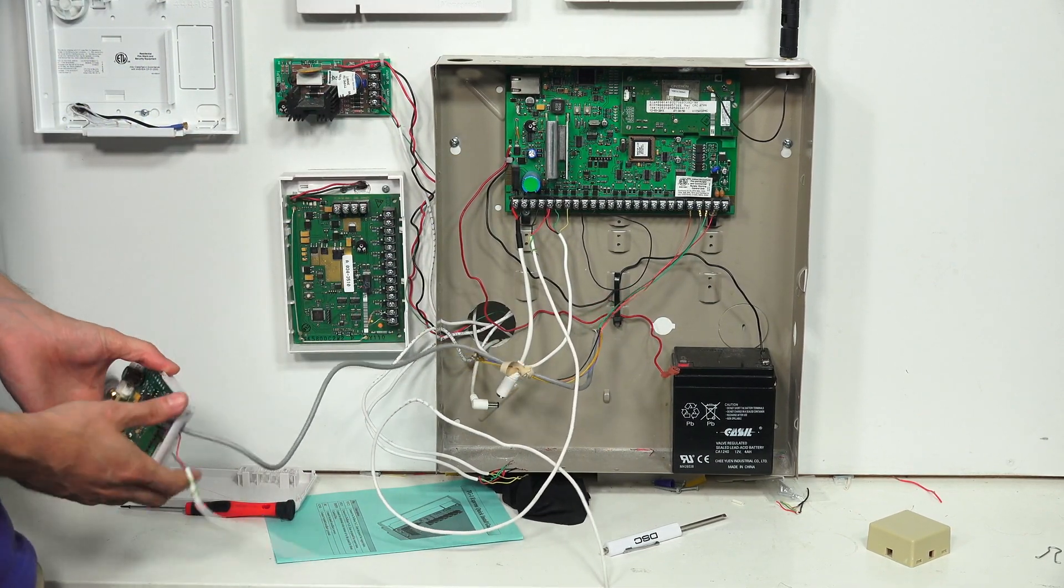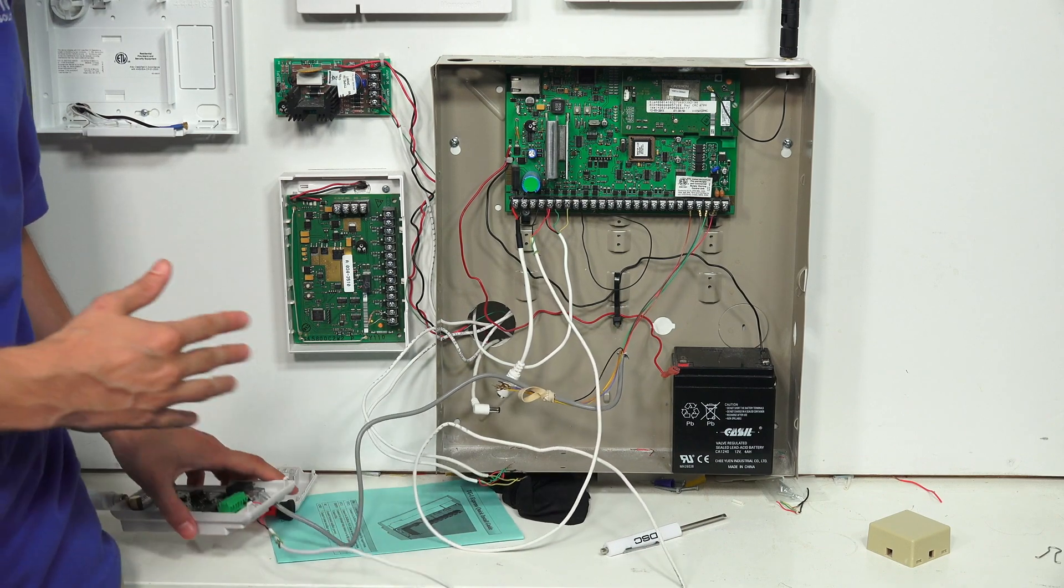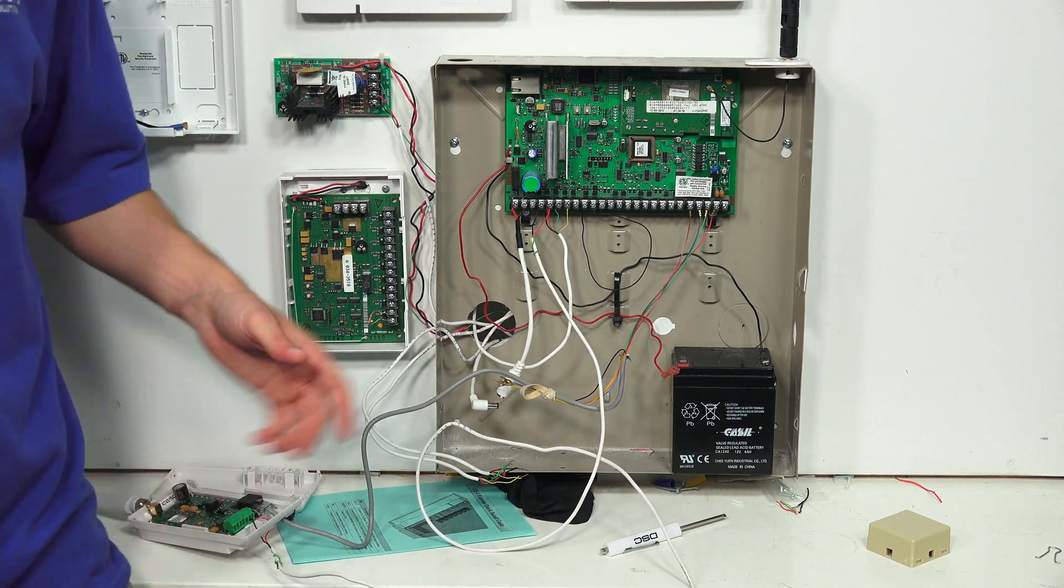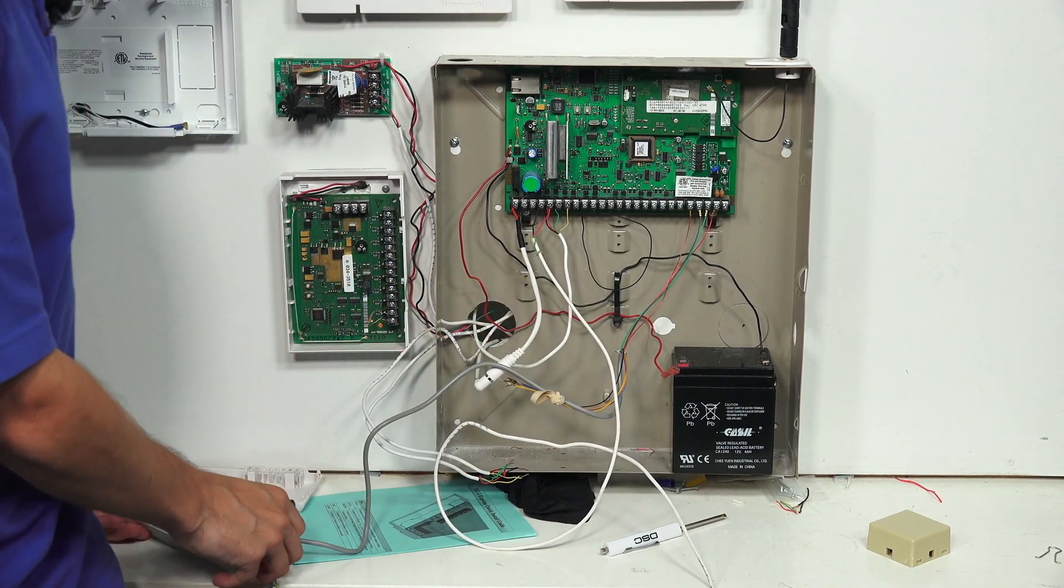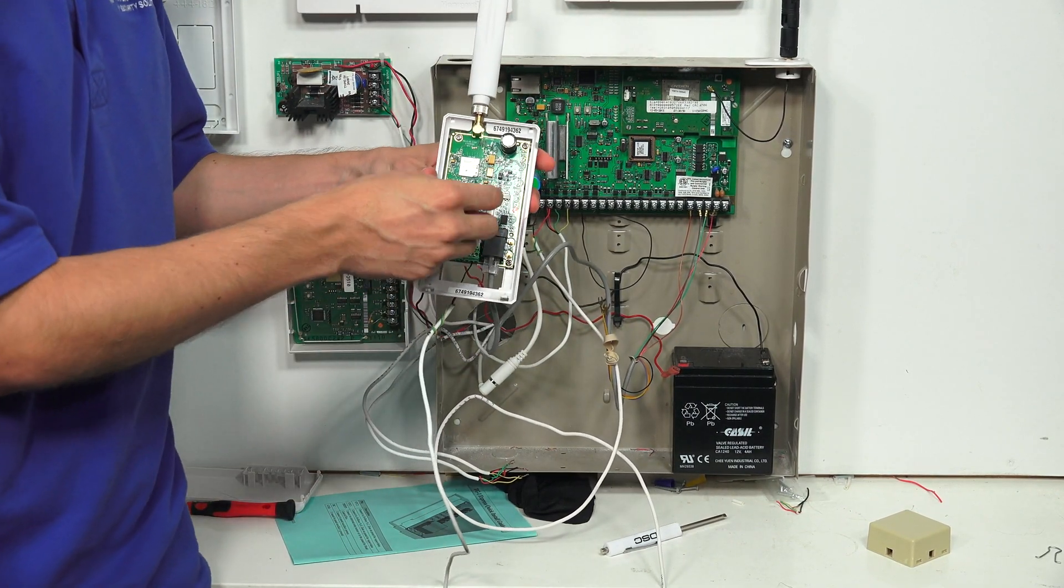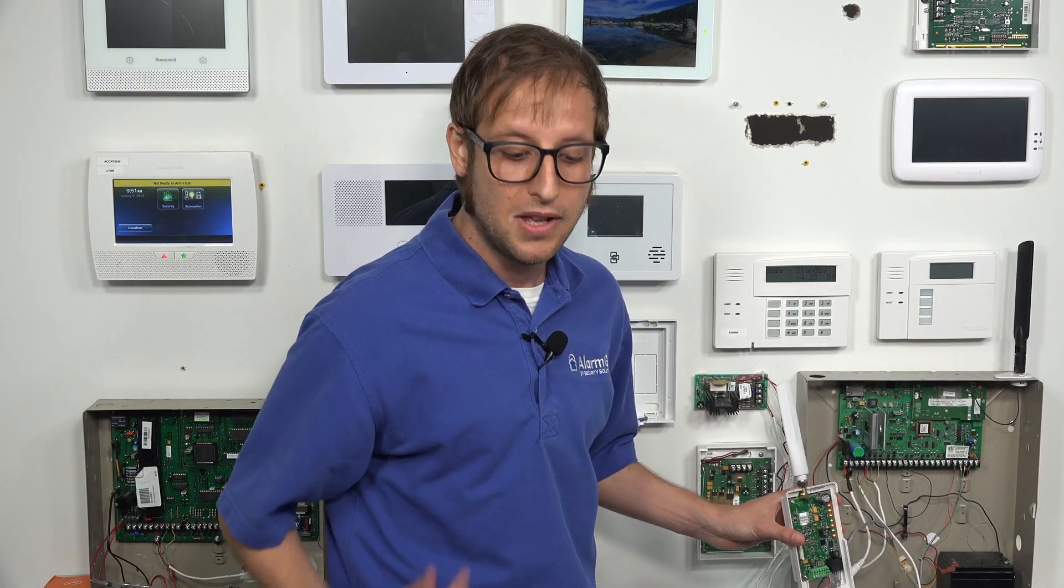Now that we've done that, we can power on the panel. We've made our connections. Everything's installed. So we're just going to power our system back on. In our case, we're just going to plug the LT cable back in. And you can see the light appears on the Telguard, indicating that it is receiving auxiliary power from the panel. So that's great.